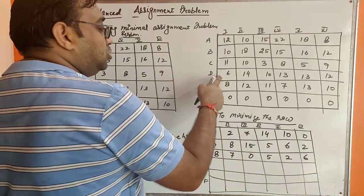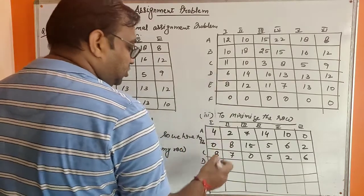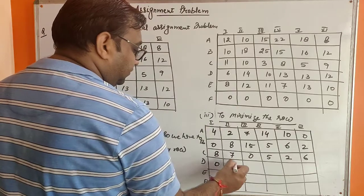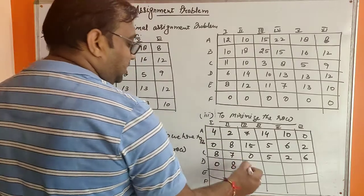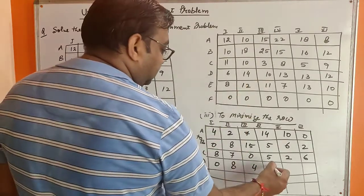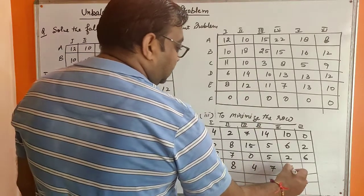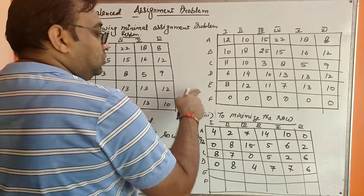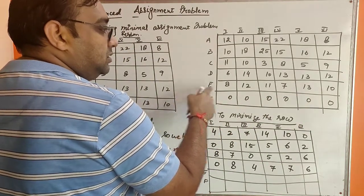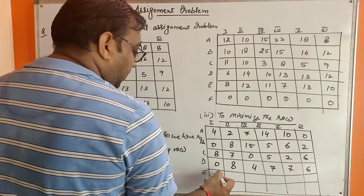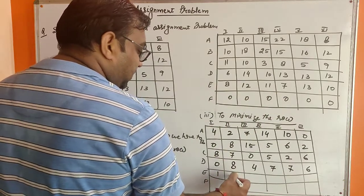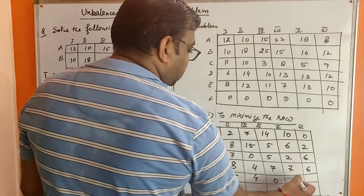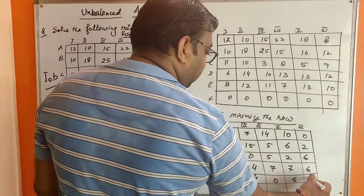In the fourth row, the minimum element is 6, so subtracting: 0, 14−6=8, 10−6=4, 13−6=7, 13−6=7, and 12−6=6. In the fifth row, the minimum element is 7: 8−7=1, 12−7=5, 11−7=4, 7−7=0, 13−7=6, and 10−7=3. The last dummy row contains all zeros, so no subtraction needed.